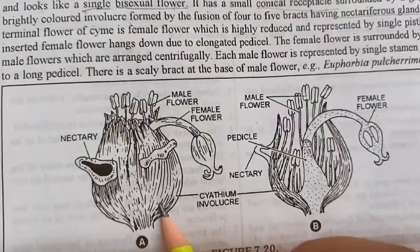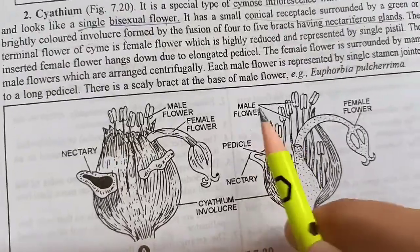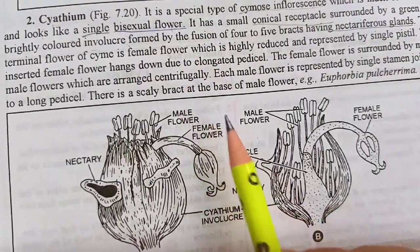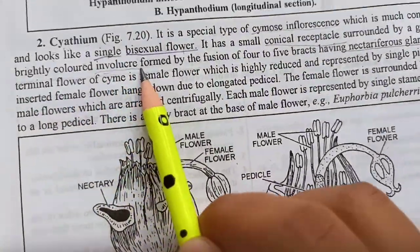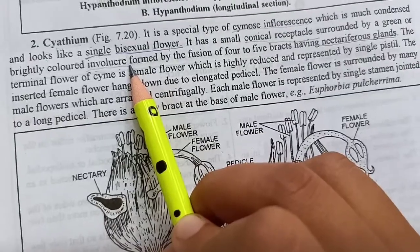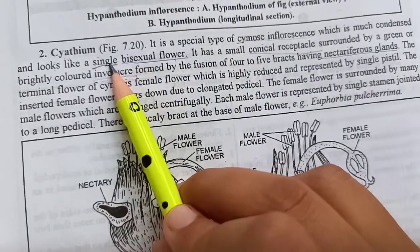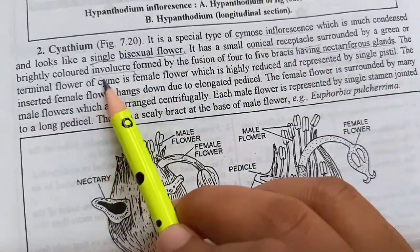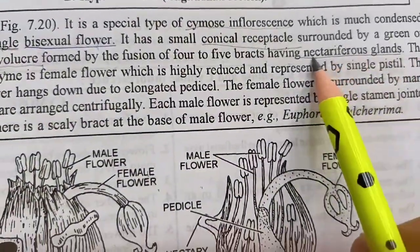Involucre of bracts — ek hi branch pe agar ek phool lagta hai toh kitni bract hogi? Ek. Lekin yahan pe likha gaya hai involucre of bracts, matlab ki jo bracts hain woh bahut saare cluster mein present hain. Iska matlab hai ki jo hume single flower dikh raha hai woh single nahi hai, kyunki receptacle ke aaspaas kya hai — involucre of 4 to 5 bracts having nectiferous glands.